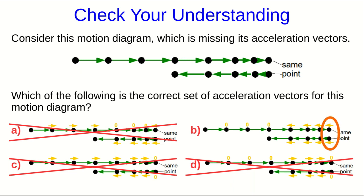You might be a little worried about these points because you haven't seen how to deal with a reversal of direction. Remember that these two points are the same point, and so the velocity just before this is here, and the velocity just after it is here. We can now do the vector subtraction, and it tells us that the acceleration points back to the left, which is what's in the diagram.